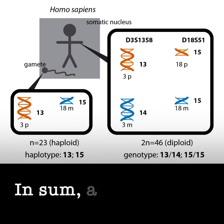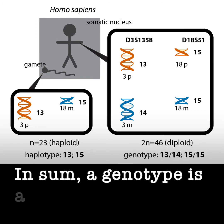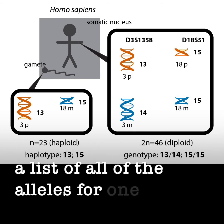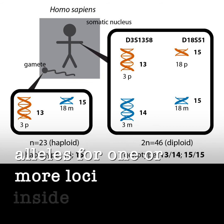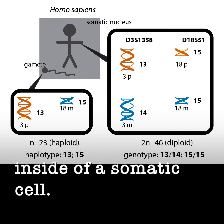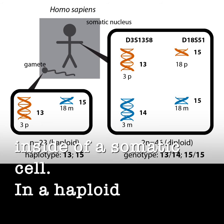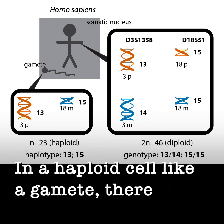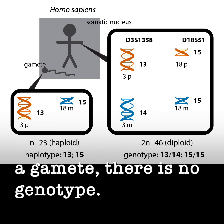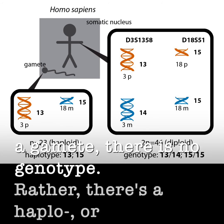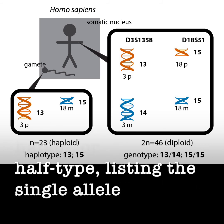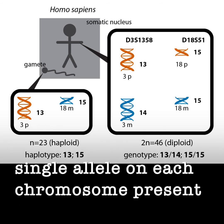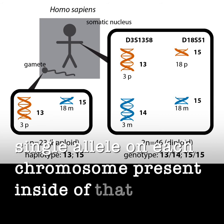In sum, a genotype is a list of all of the alleles for one or more loci inside of a somatic cell. In a haploid cell, like a gamete, there is no genotype. Rather, there is a haplotype — or half type — listing the single allele on each chromosome present inside of that cell.